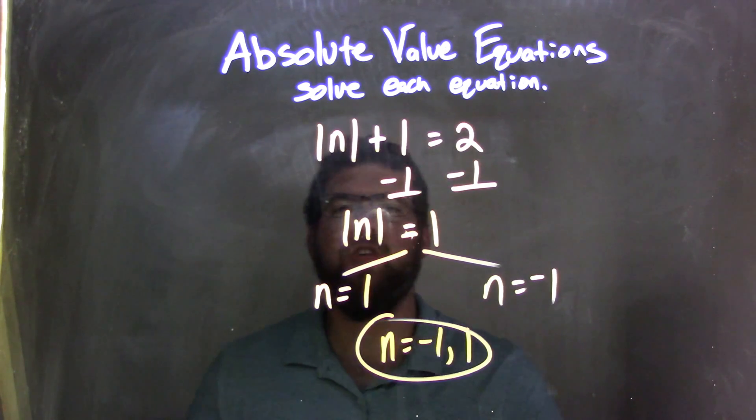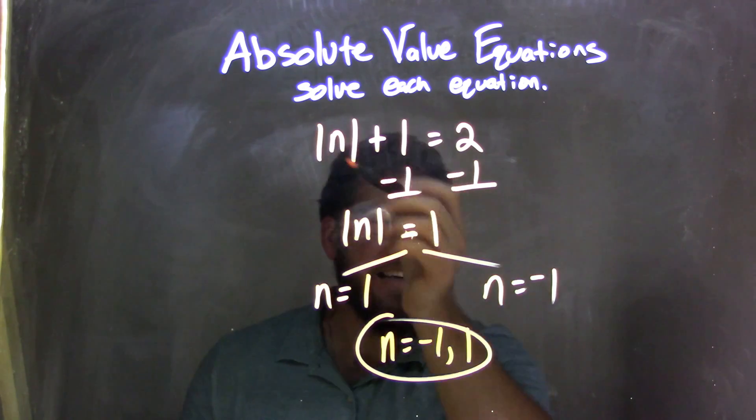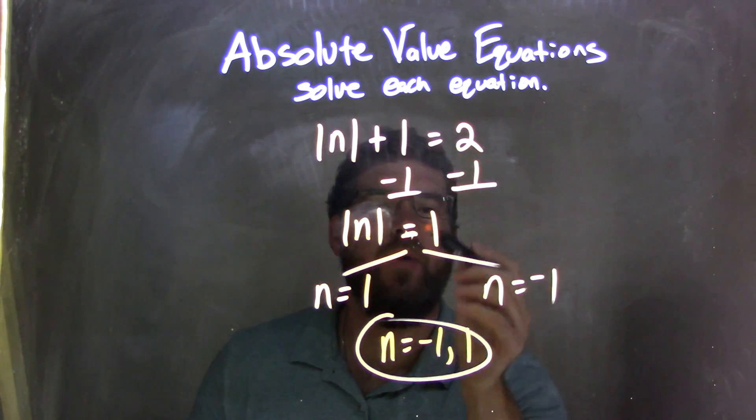Let's recap. We started with absolute value of n plus 1 equals 2. I subtracted 1 from both sides because I want to isolate the absolute value, leaving me with the absolute value equals 2 minus 1, which is 1.